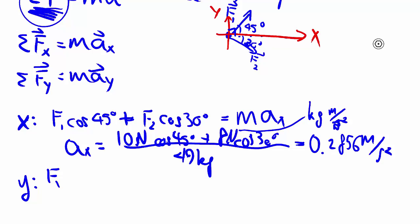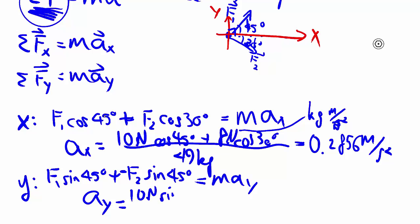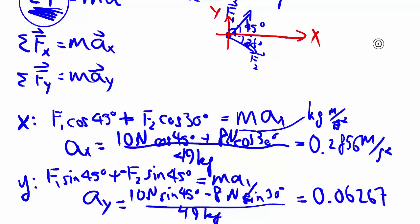For y, we do a very similar thing, except in this case, these are all the opposites of the angle. So we use sine, and F2 is negative, because it goes downwards. So it's negative y, is equal to mAy, again. So Ay is 10 newtons, sine 45, minus 8 newtons, sine 30, all over again, 49 kilograms. We have Ax and Ay now.